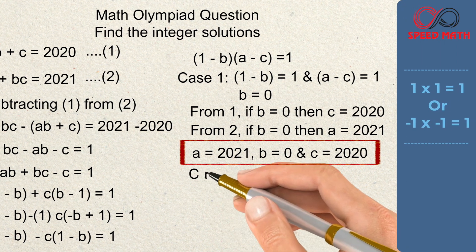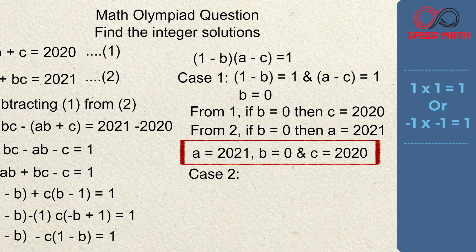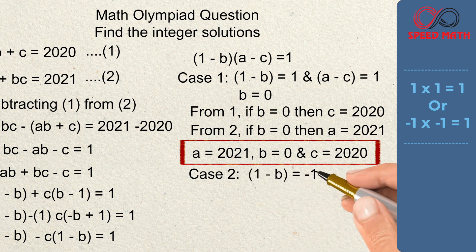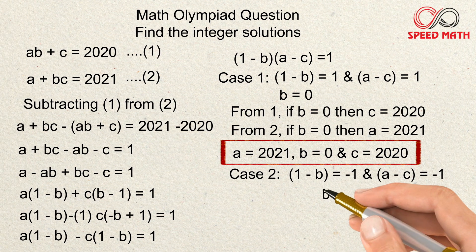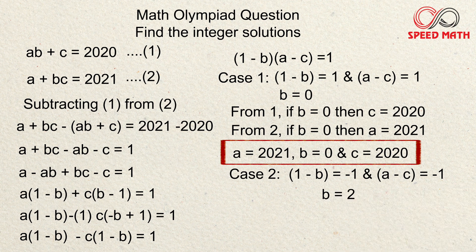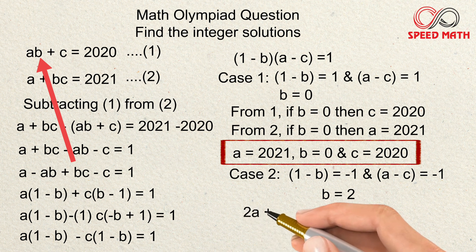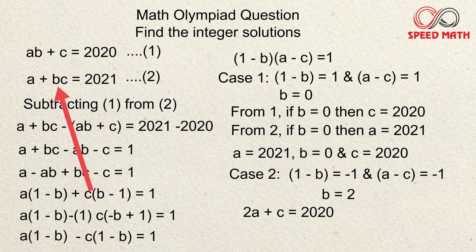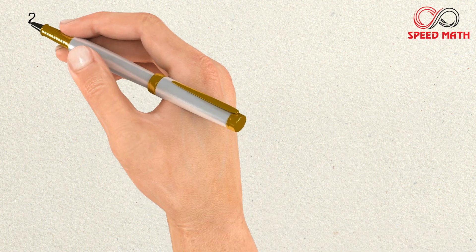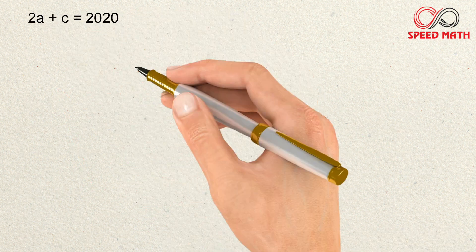Case 2: (1 − b) = −1 and (a − c) = −1. From the first bracket, b = 2. Substituting b = 2 into equation one gives 2a + c = 2020. Substituting b = 2 into equation two gives a + 2c = 2021. So we now have two new linear equations to solve.